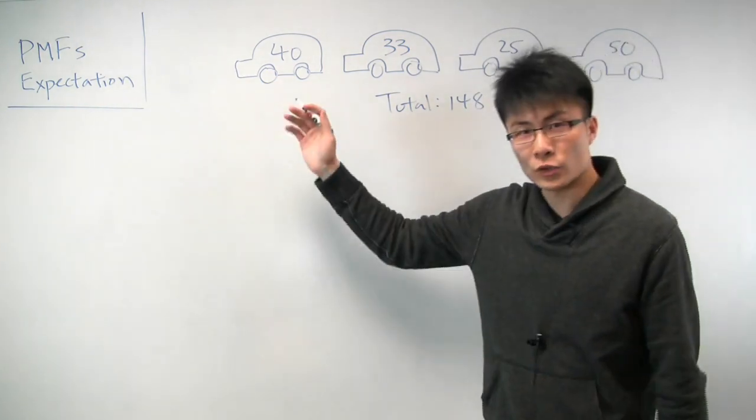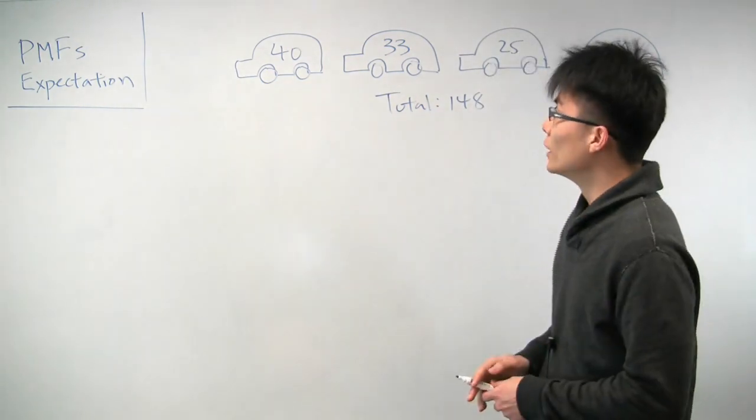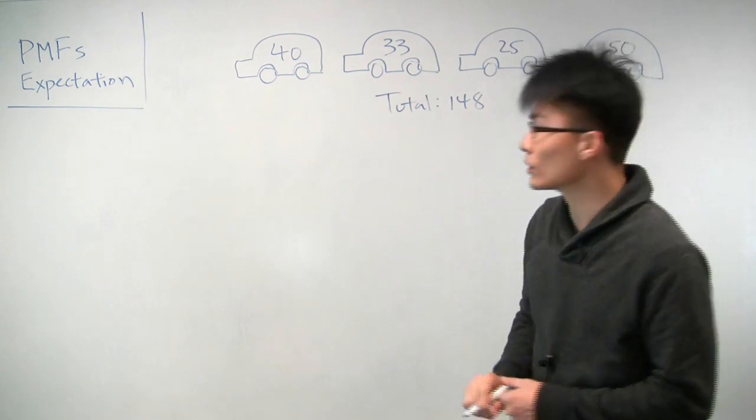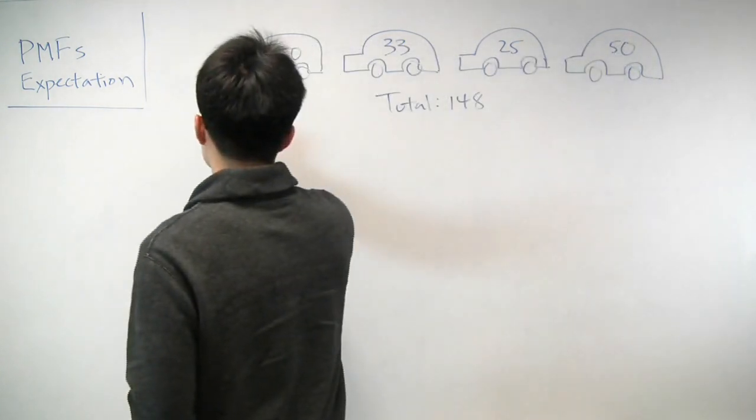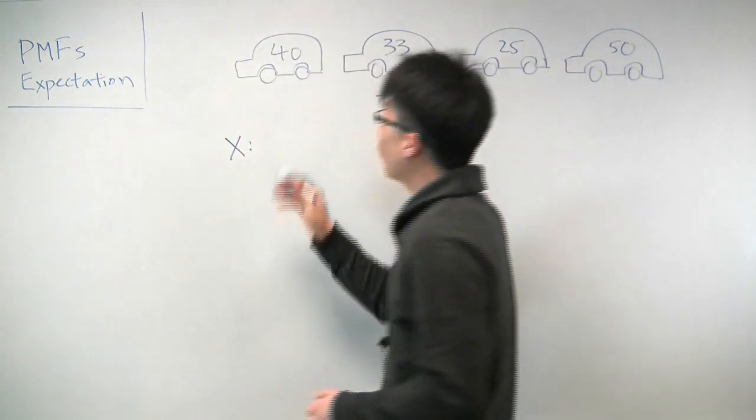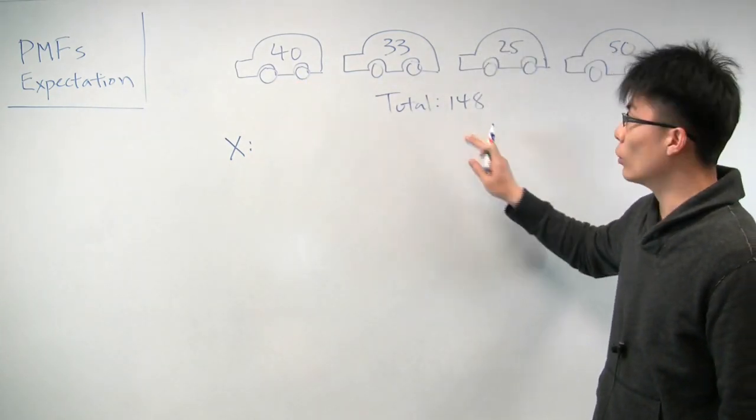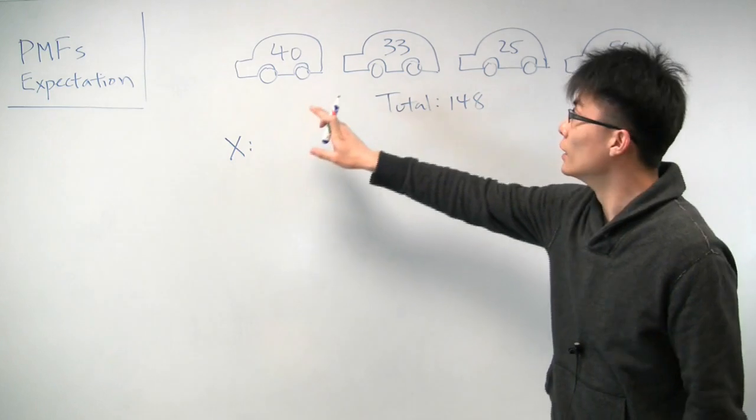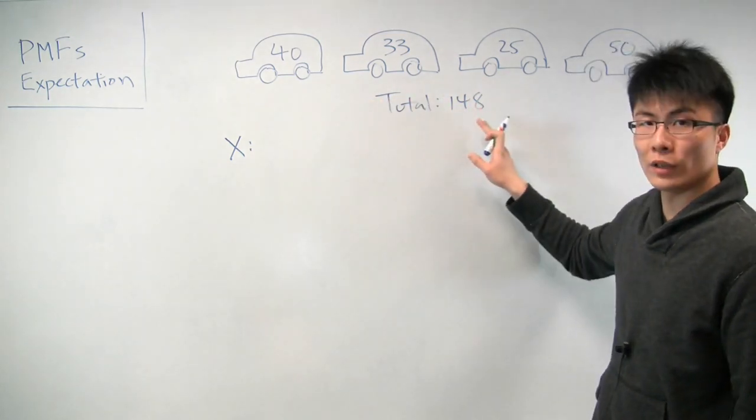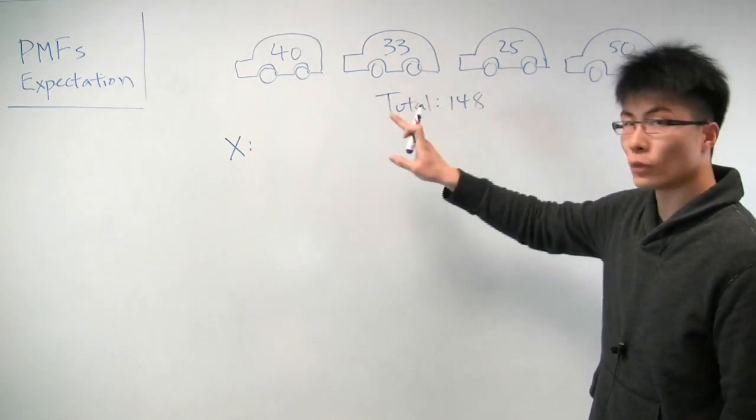Because these students are smart and they like probability, they're interested in a couple of questions. Suppose that one of these 148 students is chosen randomly. We'll assume that what that means is that each one has the same probability of being chosen, so they're chosen uniformly at random.